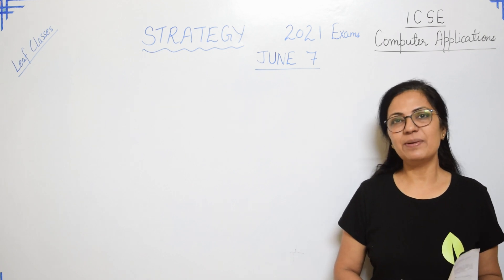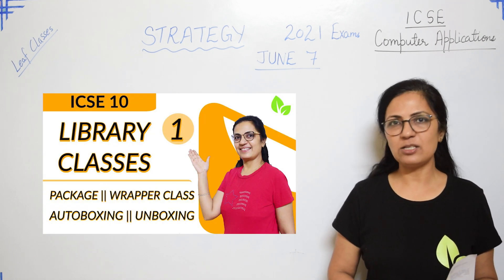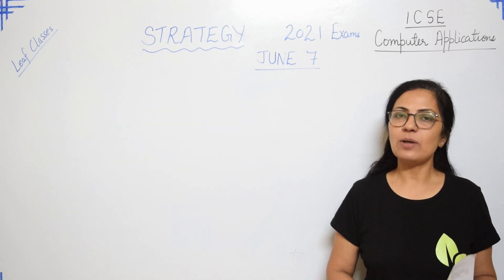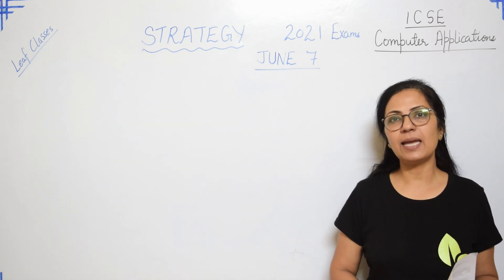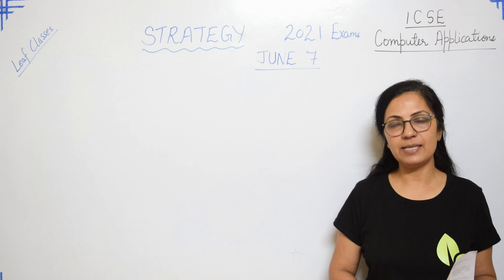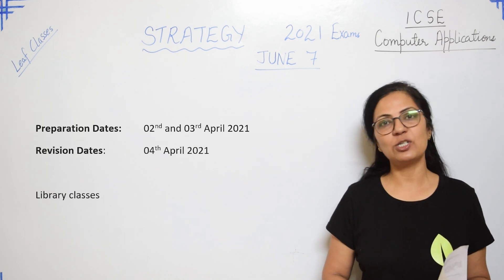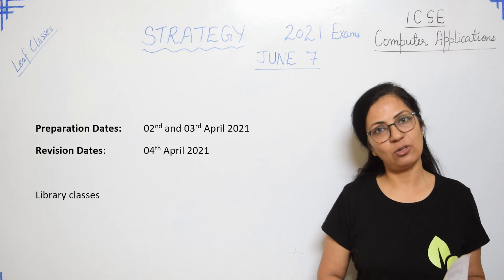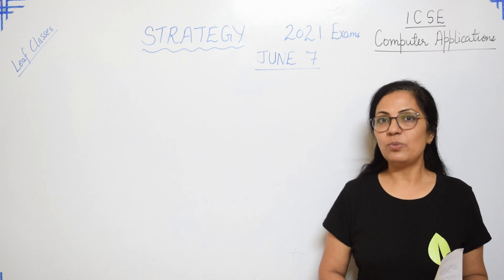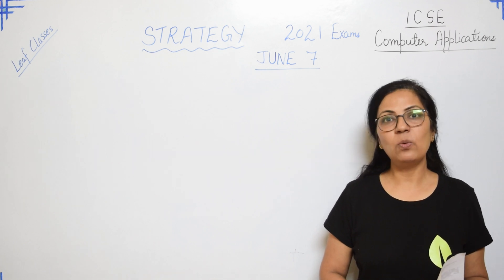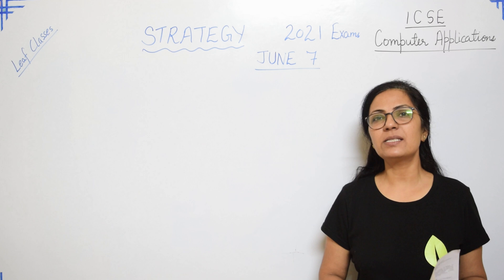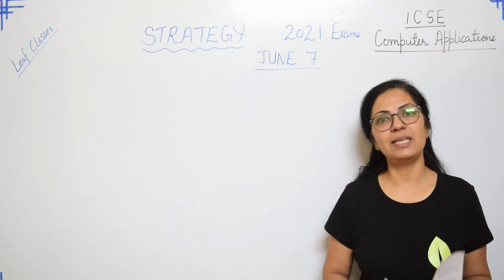The fifth topic as per your reduced syllabus is Library Classes. This is not a very lengthy topic, so I have kept only two days — 2nd and 3rd of April — for this, and only one day for revision, that is 4th of April. Those who have already prepared just revise on these dates; those who have not prepared, you need to give a little extra time.